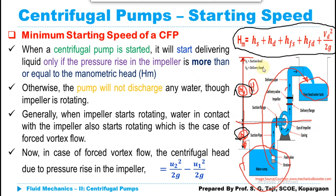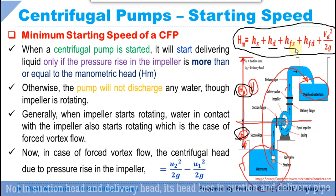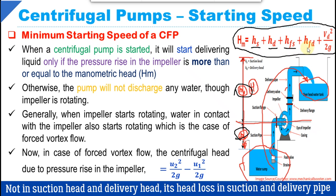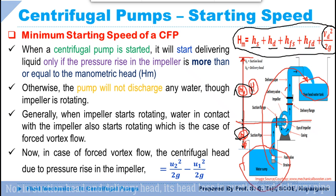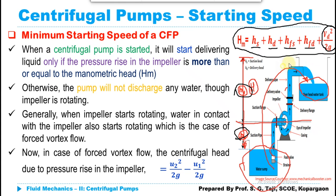In its simplest form, manometric head is given by: suction head plus delivery head plus frictional losses in the suction pipe plus frictional losses in the delivery pipe plus the velocity head available at the outlet of the delivery pipe. Adding all these heads together gives the manometric head.